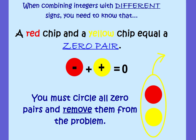What about if the signs are different? If the signs are different, we need to know a little bit more before we can actually model. A red chip and a yellow chip equal what we call a zero pair. If you have a negative and you have a positive, they cancel each other out. If you owe a dollar to your friend and you pay them that dollar back, your debt is canceled — you don't owe any more money, it equals zero. So a positive and a negative is what we call a zero pair. They cancel each other out and equal zero. It's very important to know this term — we're going to use it when we start solving equations.